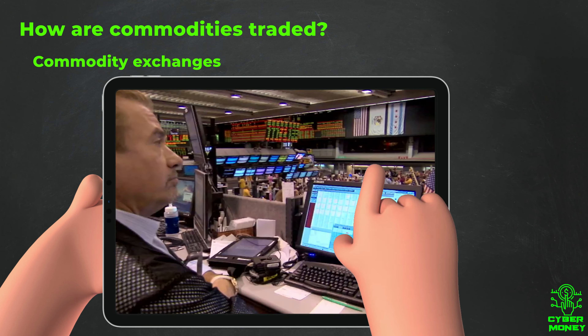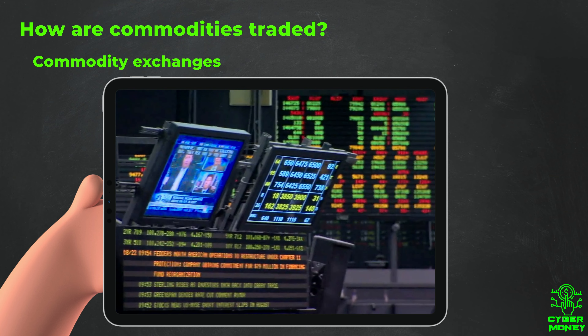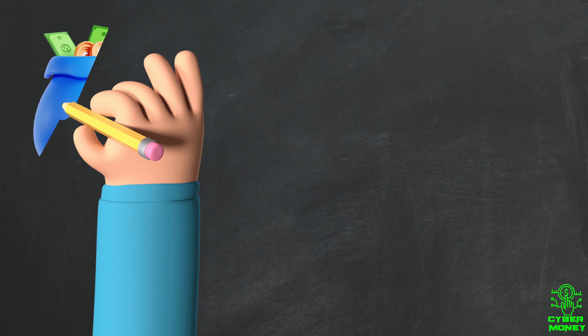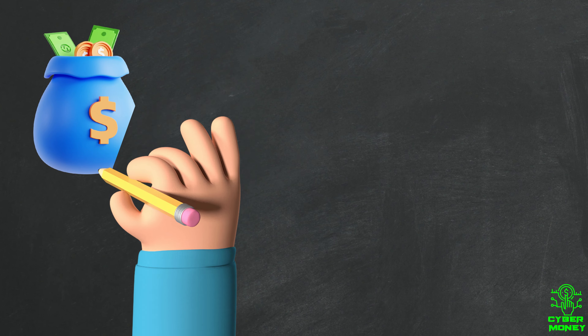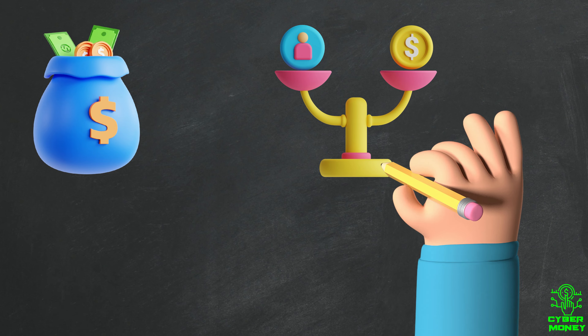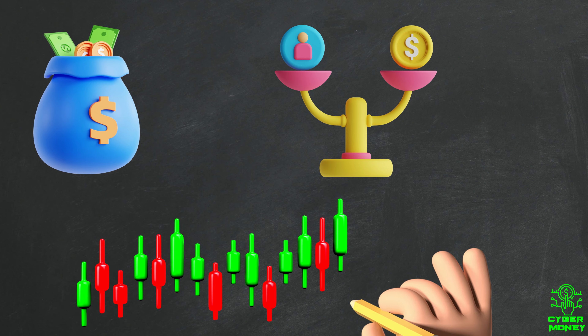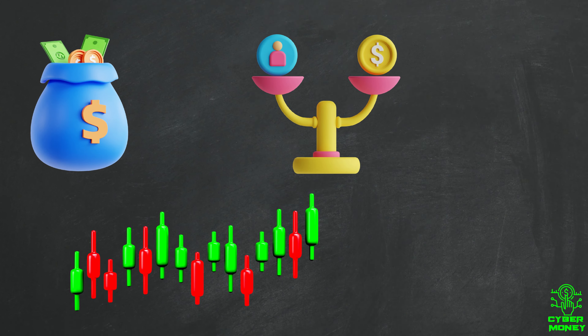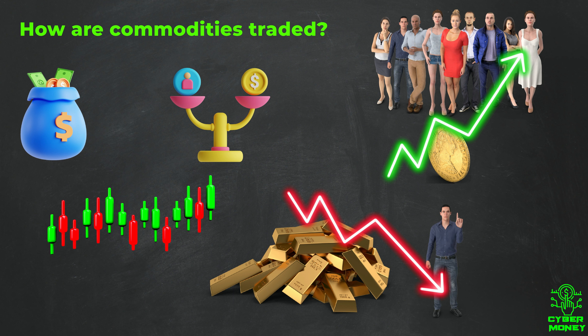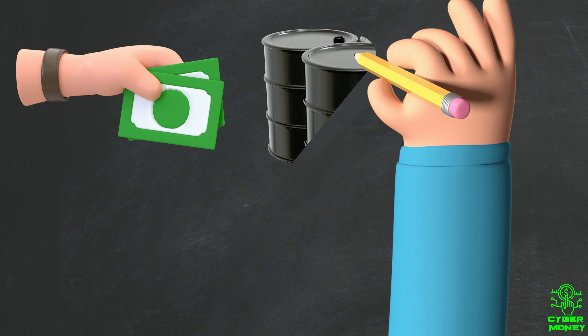Just like you would buy and sell stocks on the stock market, you can buy and sell commodities on these commodity exchanges. The prices for commodities change based on supply and demand, just like the prices for stocks. When there's a lot of demand for a commodity and not much supply, the price goes up. When there's a lot of supply and not much demand, the price goes down.